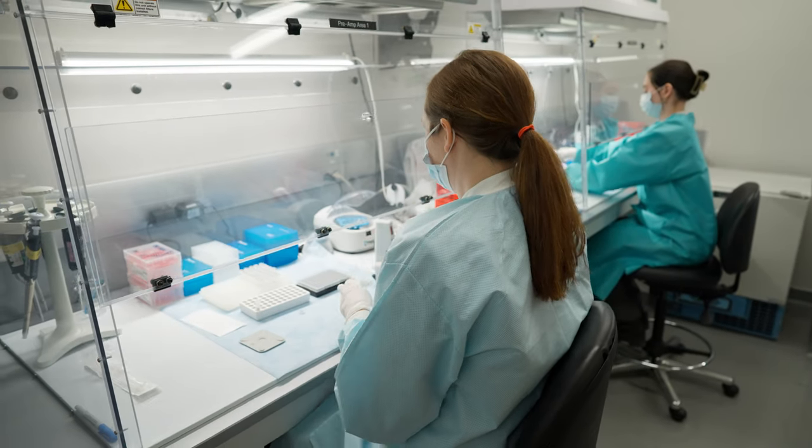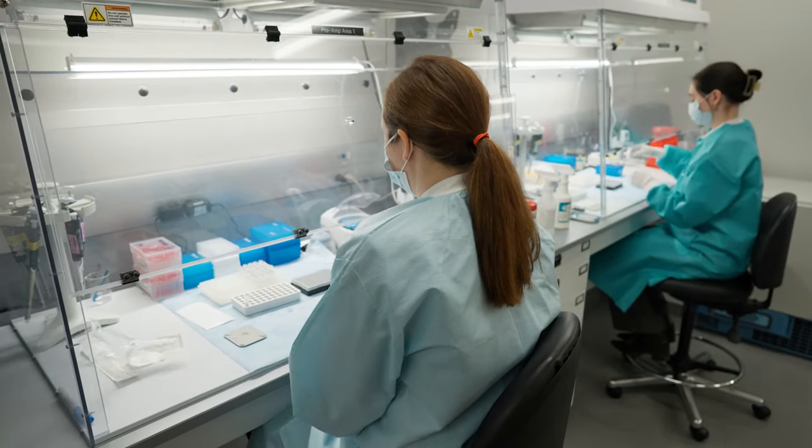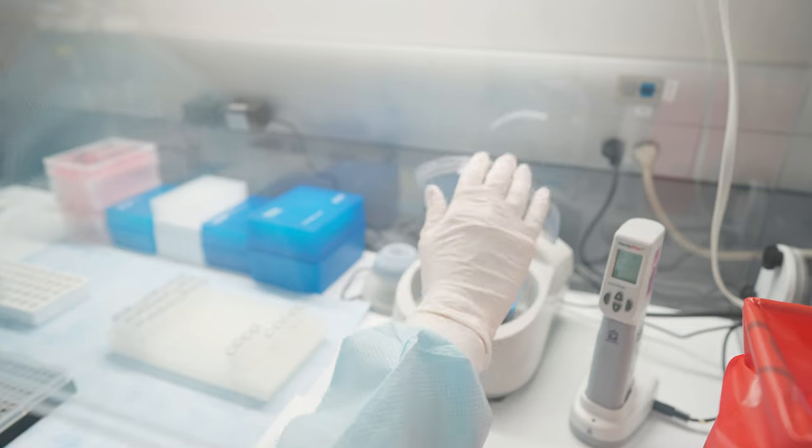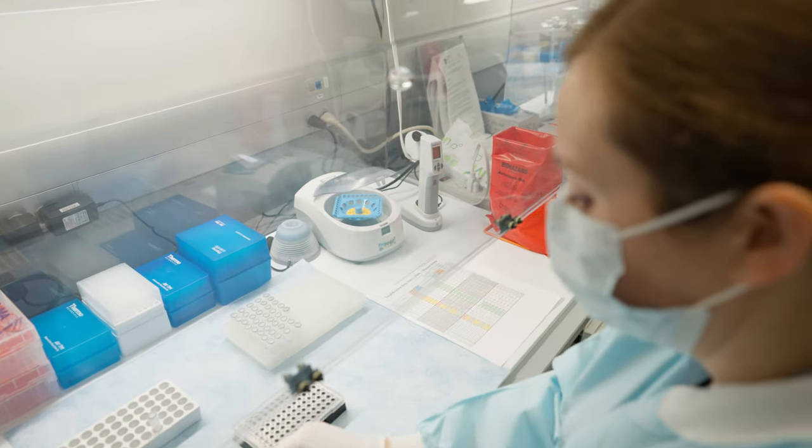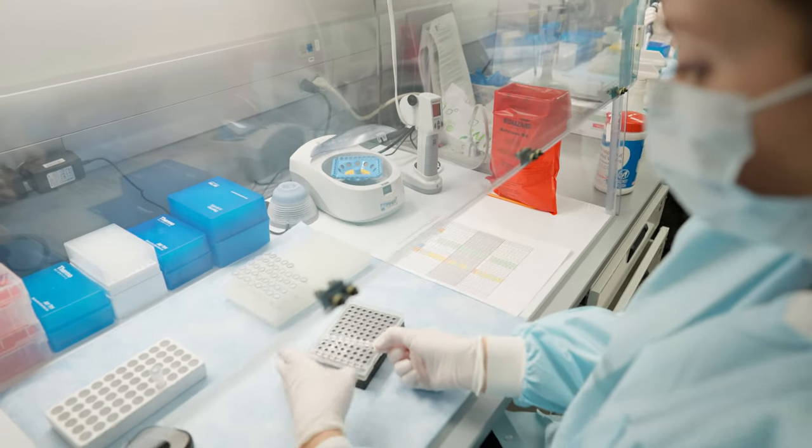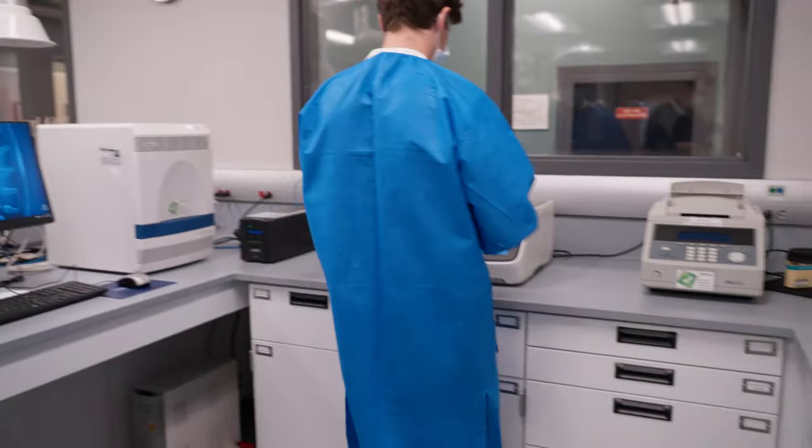During the PCR process, fluorescent tags are added to the DNA fragments as they are being copied. A specific volume of the DNA extract is added to a PCR plate containing the amplification reagents. The volume of DNA extract used depends upon the quantitation results.